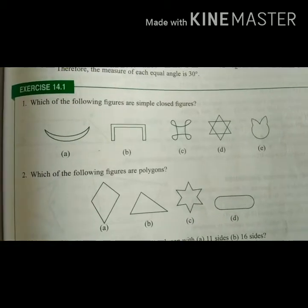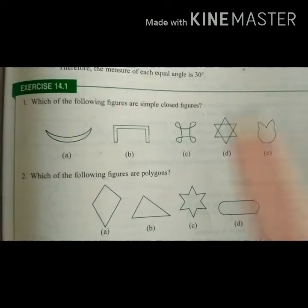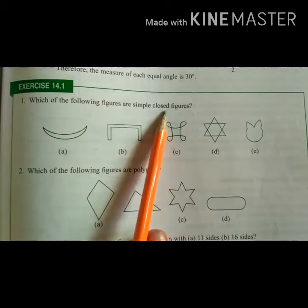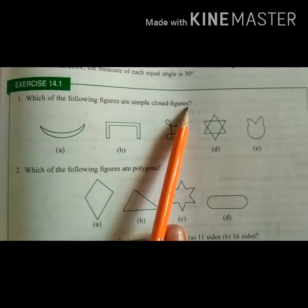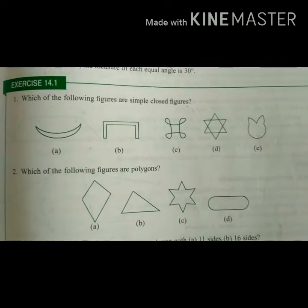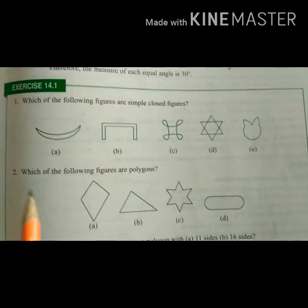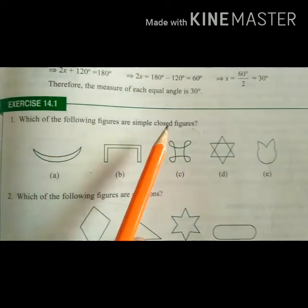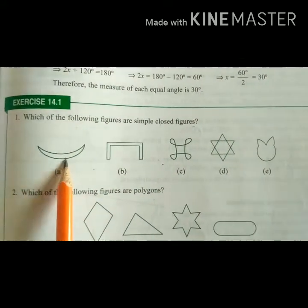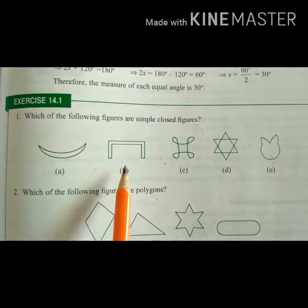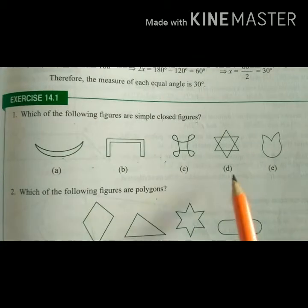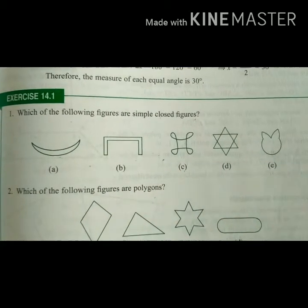Exercise 14.1. Question 1: Which of the following figures are simple closed figures? We need to find the closed figures. A closed figure is one that is simple and closed. Looking at the options: A is closed, B is closed, C is closed, D is closed, E is closed.